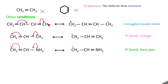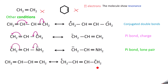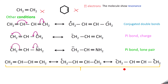Next, take 1,3-butadiene. You can write the same type of resonance structure. Shifting in one direction gives one structure, and shifting in the opposite direction gives one more structure. So there are three resonance structures — also called canonical structures — for 1,3-butadiene.